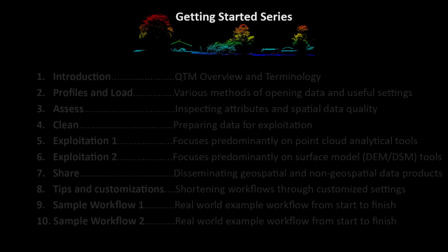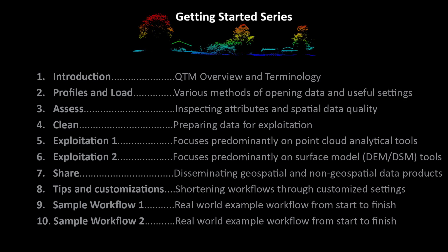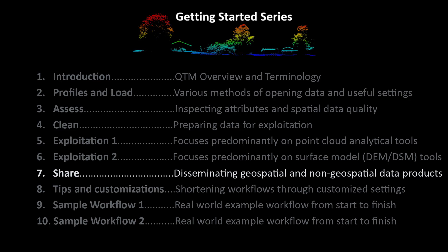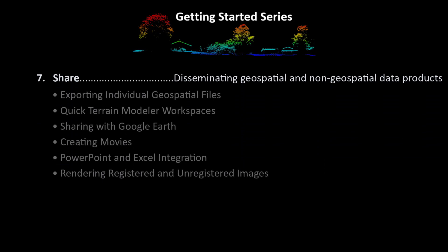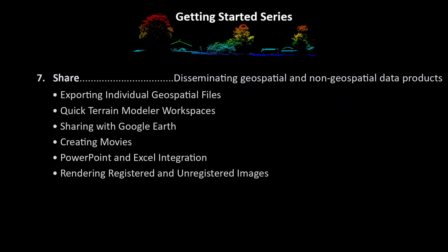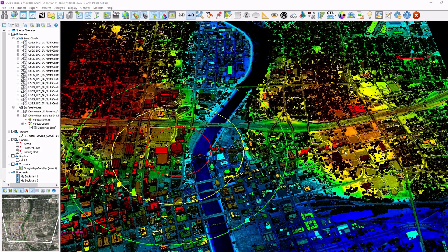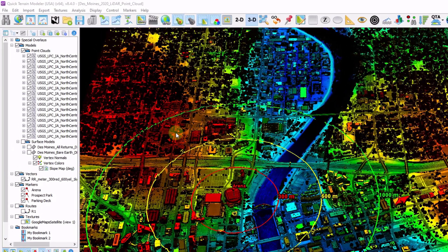Hello, and welcome to Applied Imagery's Getting Started series. This multi-part series is designed to get users proficient in the tools and capabilities available within the Quick Terrain Modeler software. This chapter covers data sharing and disseminating both geospatial and non-geospatial data products. Let's get started by looking at the different ways of exporting individual geospatial files.